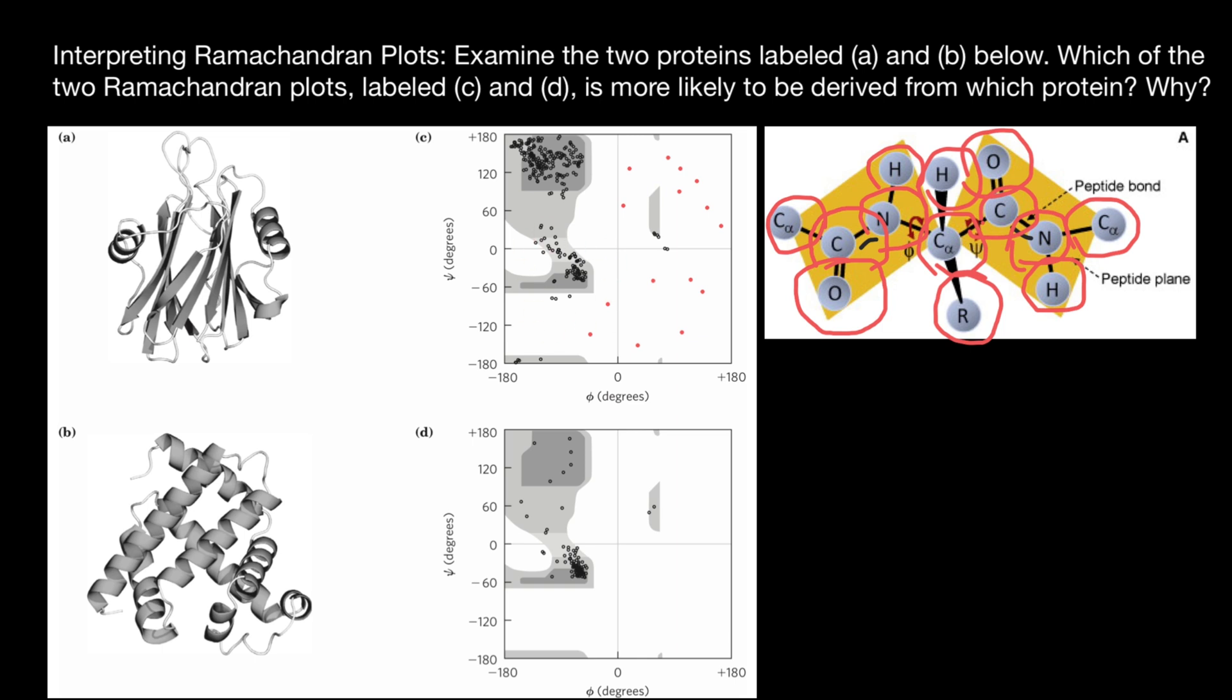And this explains why phi and psi angles can be only concentrated around certain numbers or degrees of the angles, because we have only two variants of the secondary structures, which are beta-pleated sheets and alpha helices.